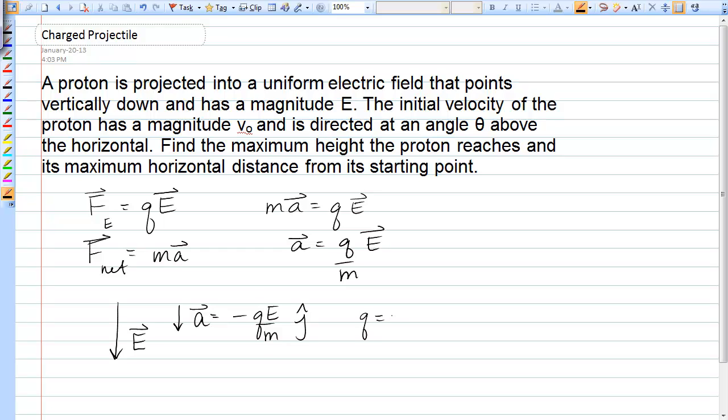Now, the charge on a proton is equal to just small e, and so substituting that in, the magnitude of the acceleration will be minus little e times big E over M. And that's what we'll use in our kinematic equations for the constant acceleration of this proton.